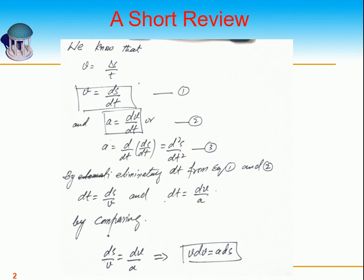Now we have the relationship between velocity, displacement, and time, and between acceleration, velocity, and time. We must also have a relationship between velocity, acceleration, and displacement. From equation one we find dT, and from equation two we also find dT. Setting these equal gives us VdV = a·dS. So we have three tools: equation one, equation two, and VdV = a·dS, which we use to solve the problems in the next section.